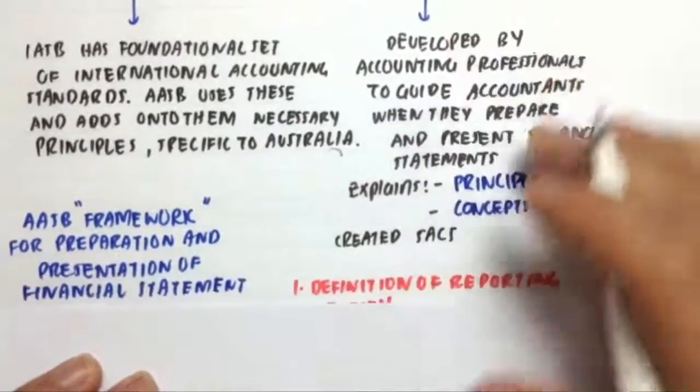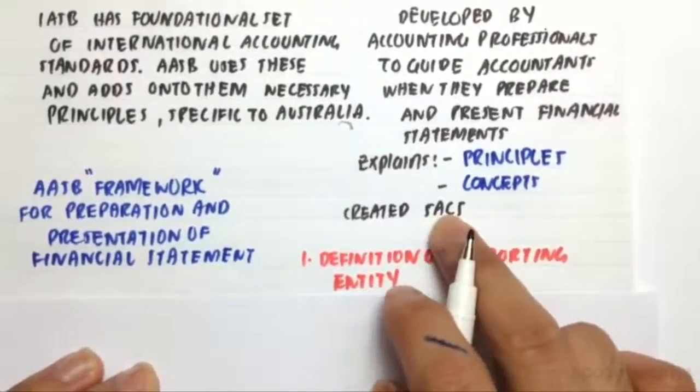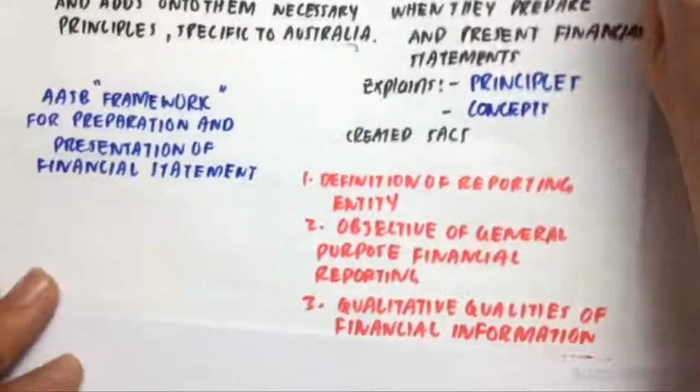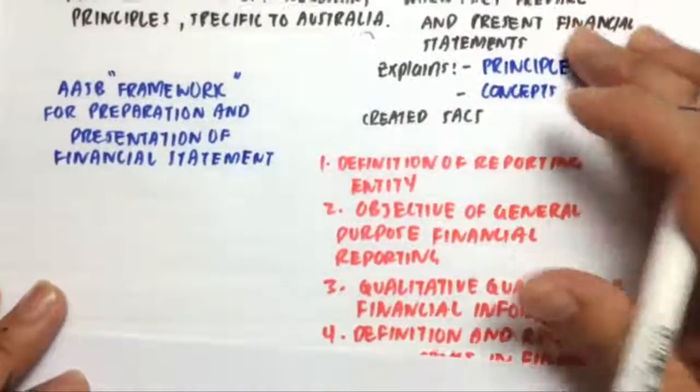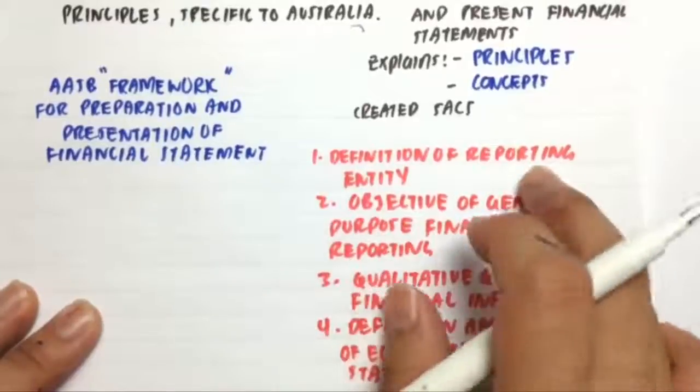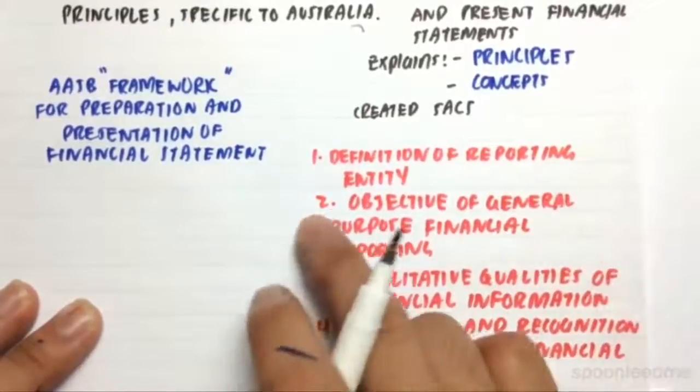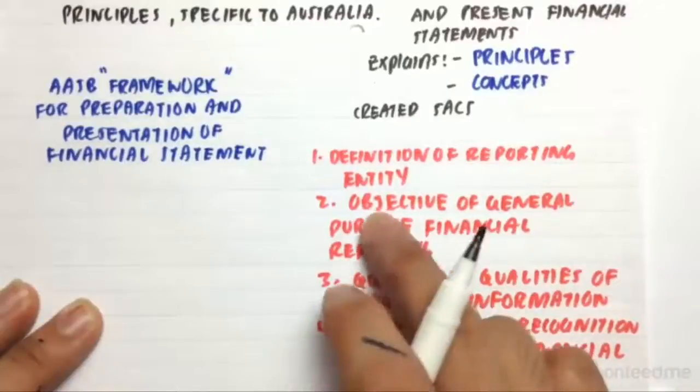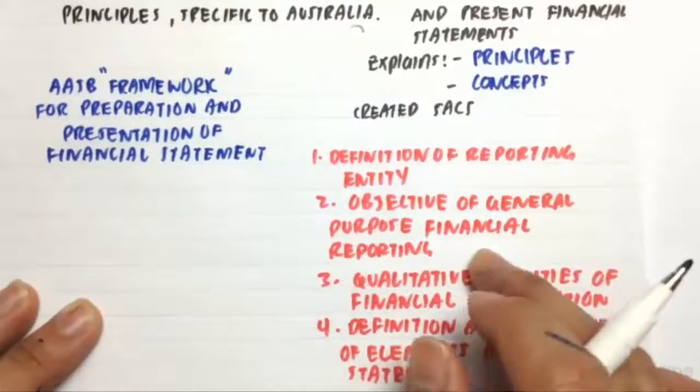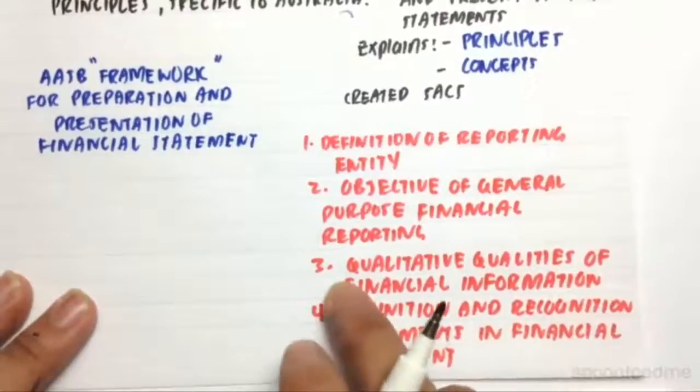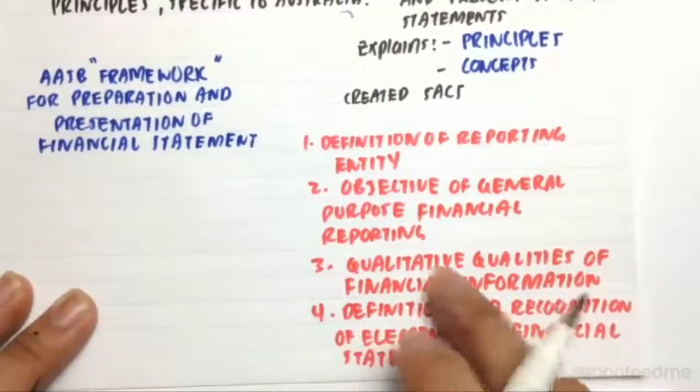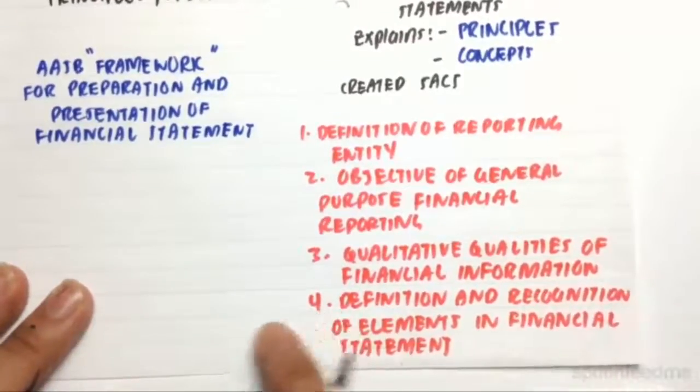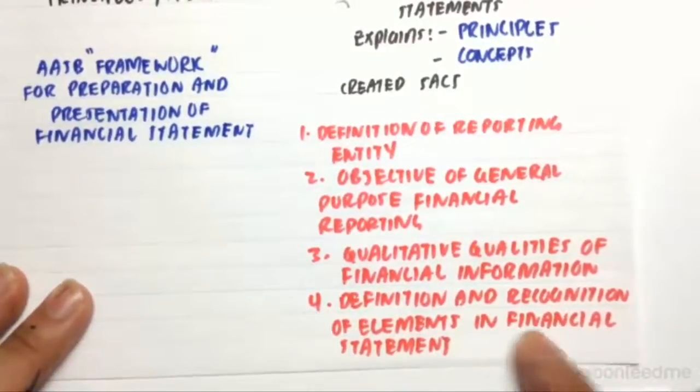So they created SACs or the Statement of Accounting Concepts. There were originally four SACs. SAC 1 is the Definition of Reporting Entity. SAC 2 provides a statement about the objective of general purpose financial reporting. SAC 3 provides a statement about qualitative qualities of financial information. And SAC 4 gave the definition and recognition of elements in the financial statement.